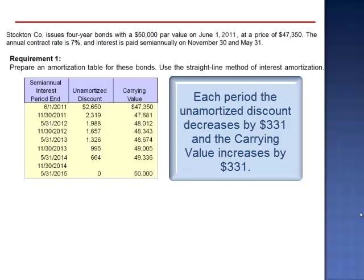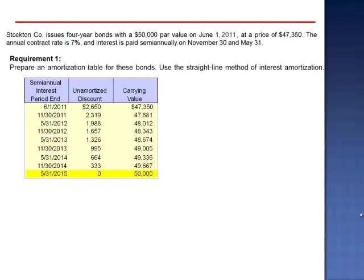November 30, 2014, $664 minus $331 is $333, bringing the carrying value up to $49,667. And in order to get from an unamortized discount of $333 to $0, the amortization in the final period is $333 to accommodate the rounding. Remember, the unamortized discount has to be $0 at the end of the bond's term and the carrying value must equal par value.